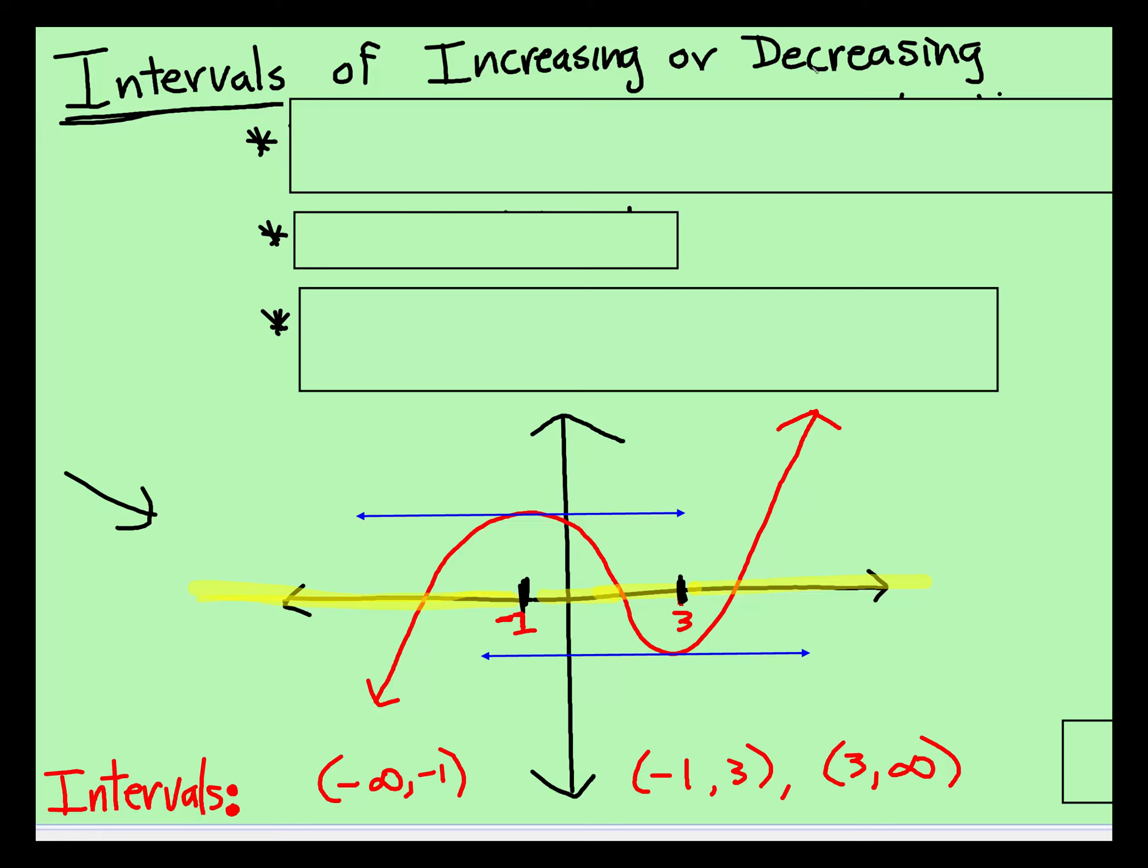Intervals of increasing or decreasing, so here are two critical points and what do we notice? I'm going to do this and do this. From right here, and this would keep going down, so from negative infinity all the way up to negative 1, the graph is increasing.